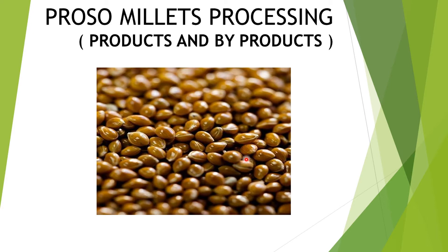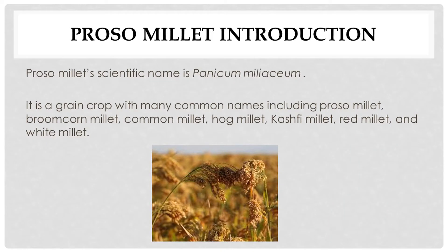Firstly, I would like to tell you that this is how ProSomulets looks like. So its scientific name is Panicum Miliatium. It's a grain crop with many common names including ProSomulet, Broomcorn Millet, Common Millet, Hog Millet, Kashi Millet, Red Millet and White Millet. It is also known as China in Hindi. This is how ProSomulets are grown.